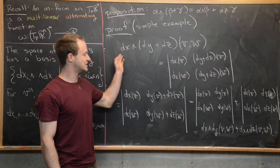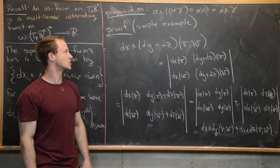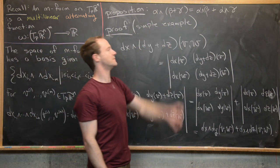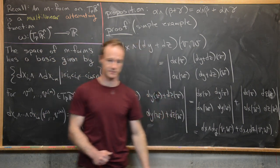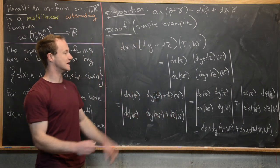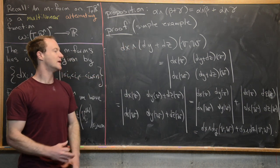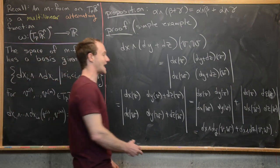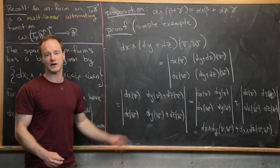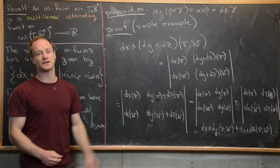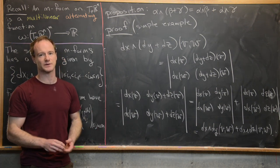This establishes that dx ∧ (dy + dz) = dx ∧ dy + dx ∧ dz, verifying distributivity in this case. For the general case, you would write forms α, β, γ as linear combinations of elementary forms and apply the same determinant sum property column-by-column for an arbitrary elementary form. The details make a good exercise.